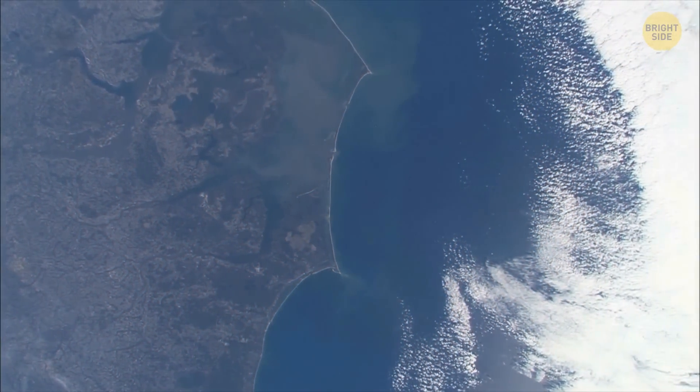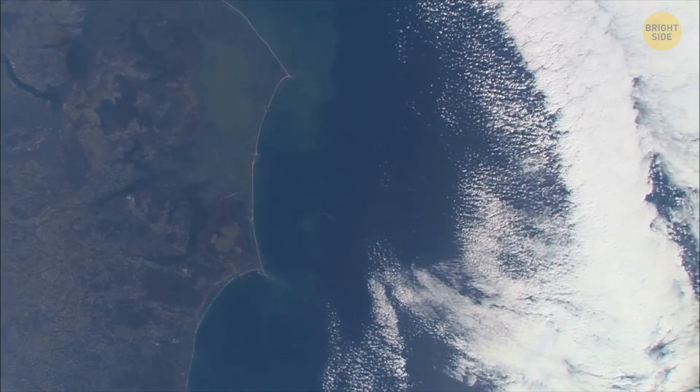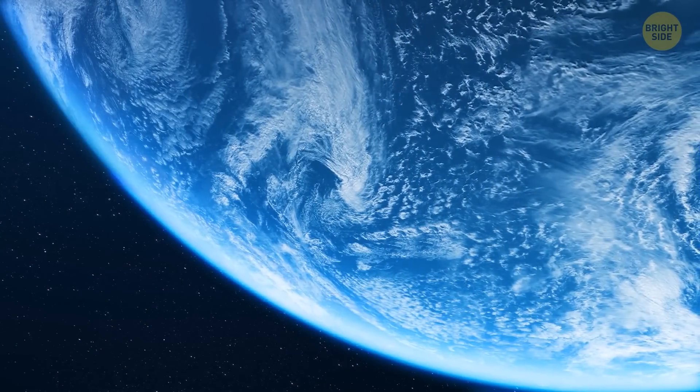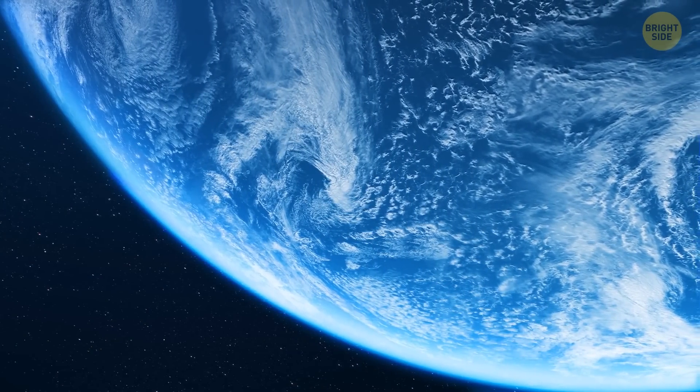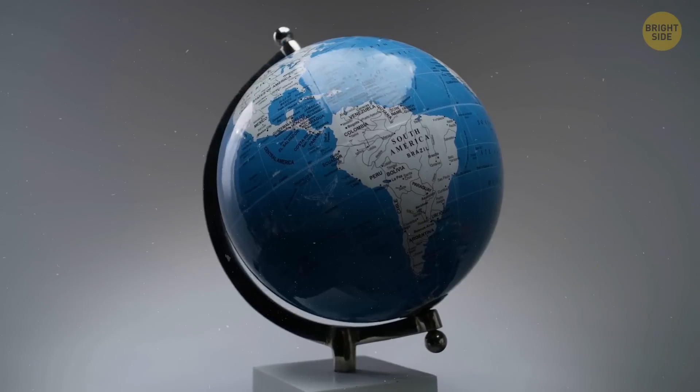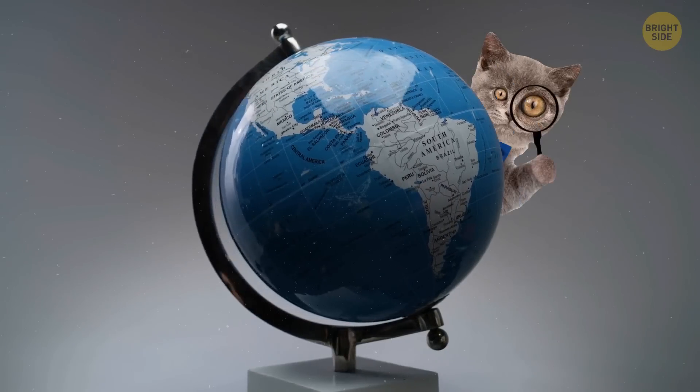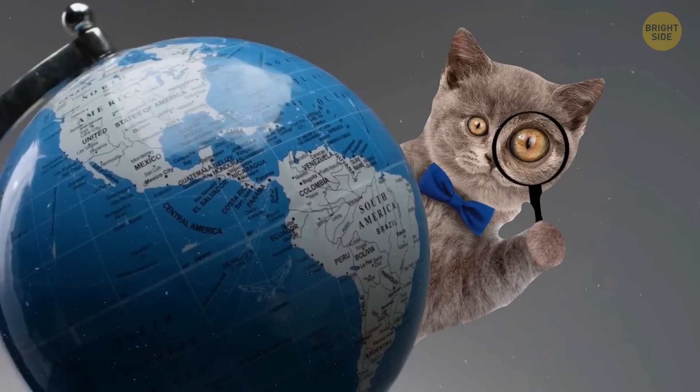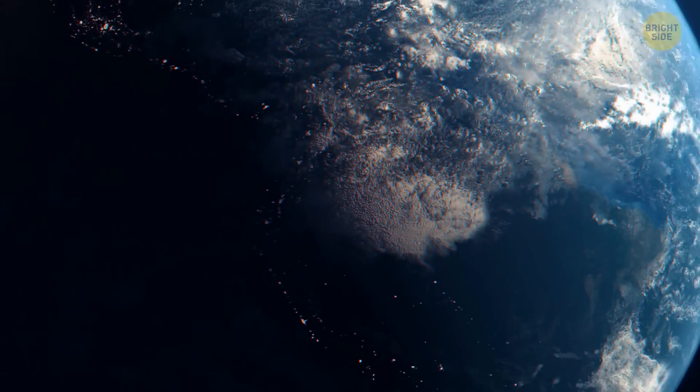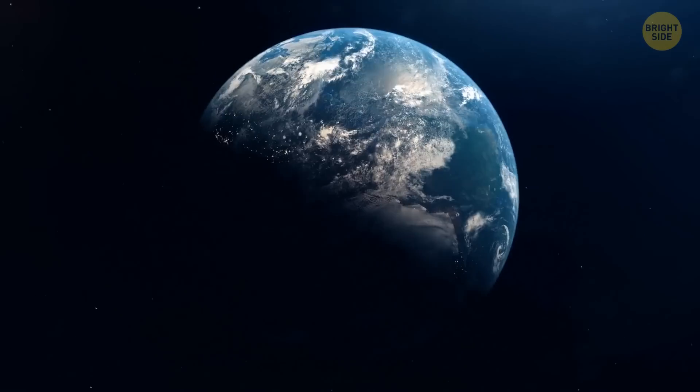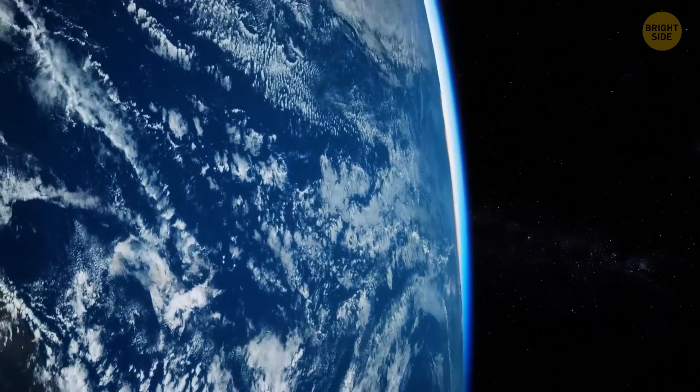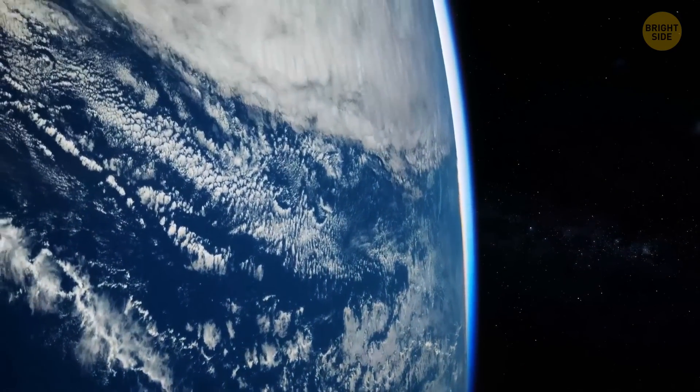Now scientists think that in the next 200 or so million years, we might see another large continent forming. In fact, we might be right in the middle of this whole supercontinent formation. There are four main scenarios of how this new land could come to be, each with its own twist. They all link back to how Pangaea split up and how our continents are still shuffling.